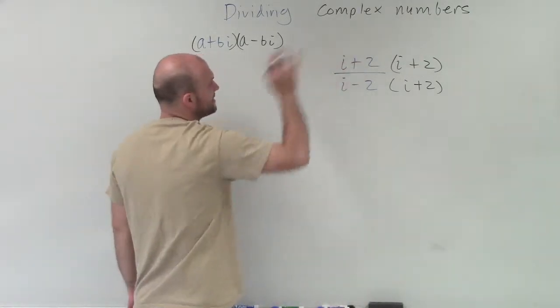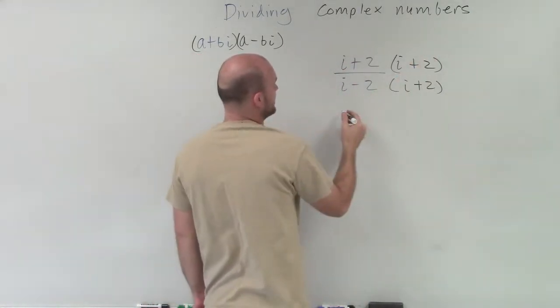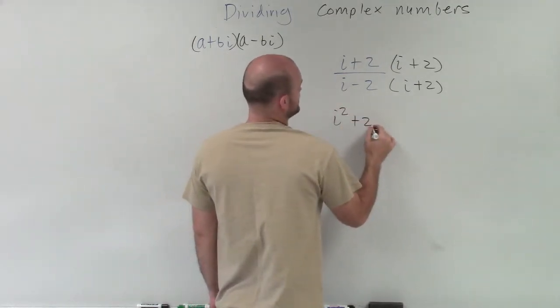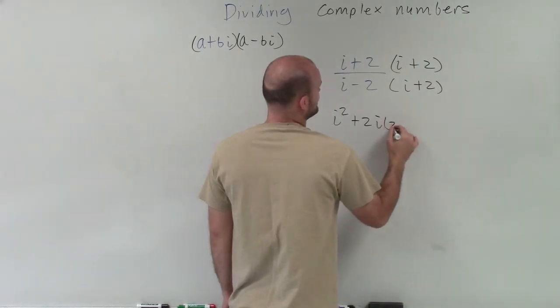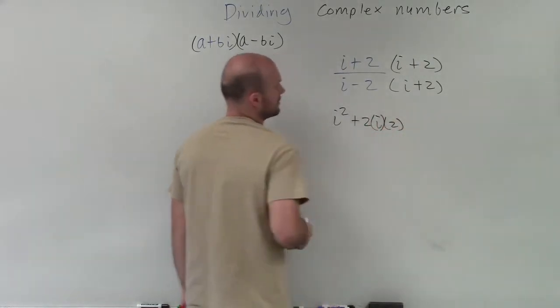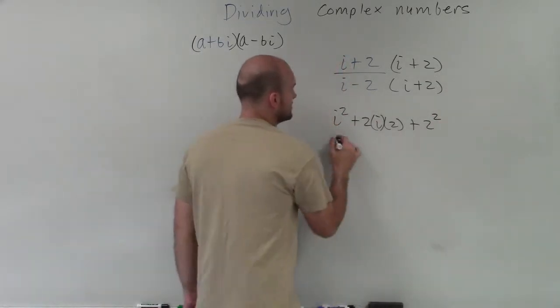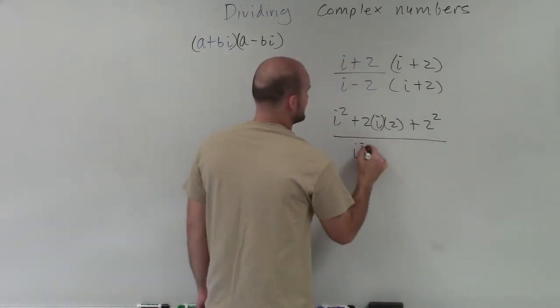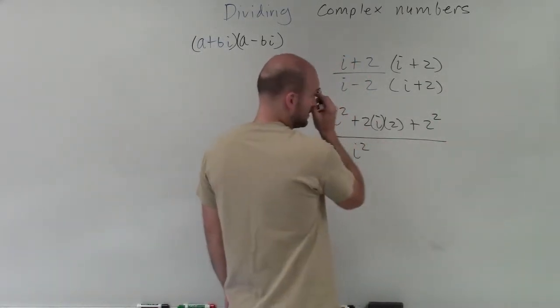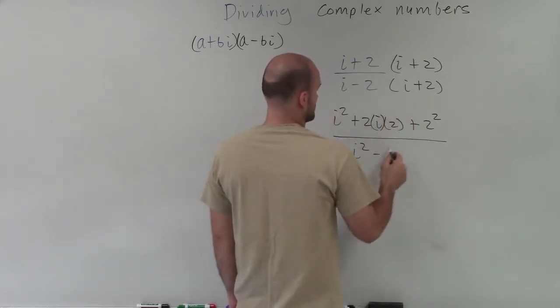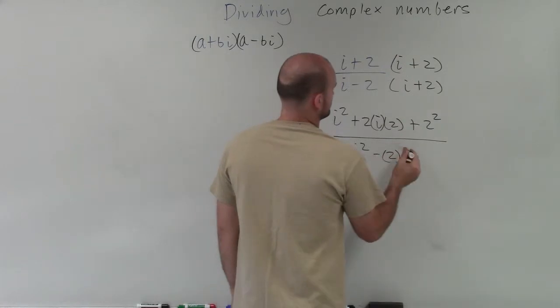So if I was going to apply the product of that, I know that for here, I'm going to have, for my numerator, my new numerator would be i squared plus 2i times 2, and then plus 2 squared. Then my denominator is going to be i squared minus 2 squared.